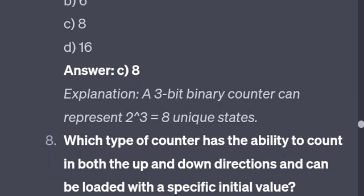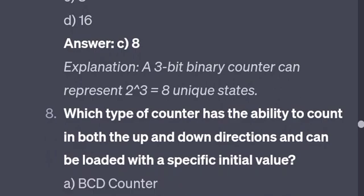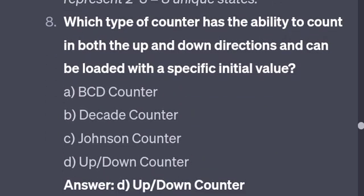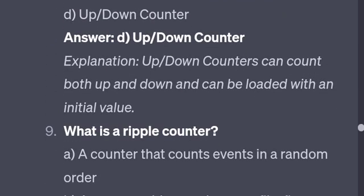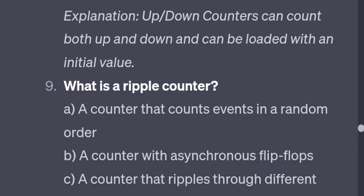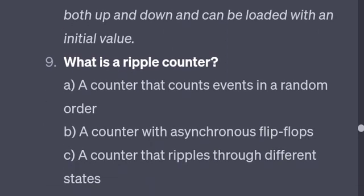What type of counter has the ability to count in both up and down directions? This is the up-down counter — already repeated. What is a ripple counter? A ripple counter is a counter with asynchronous flip-flops.